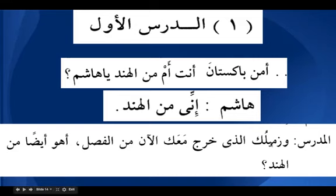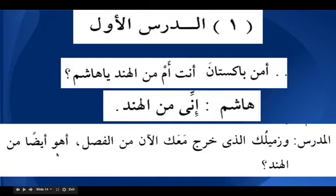The teacher asks: Wa zamiluka — zameel plus ka, where ka is damir mutasil mansoob as mudaf ilahi — allazi kharaja maaka al-an minal fasli. Here allazi is ism mausul and the silat mausul is the jumlatul fi'liya kharaja maaka minal fasli — the one who left with you now from the class. A hua aydan minal Hind — is he also from India? A is harfu istifham here.